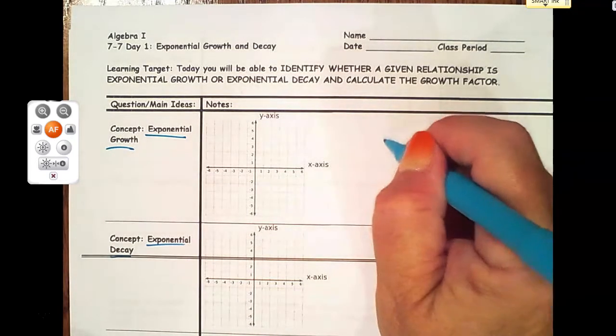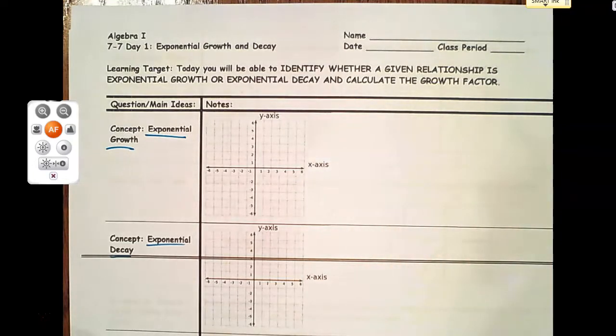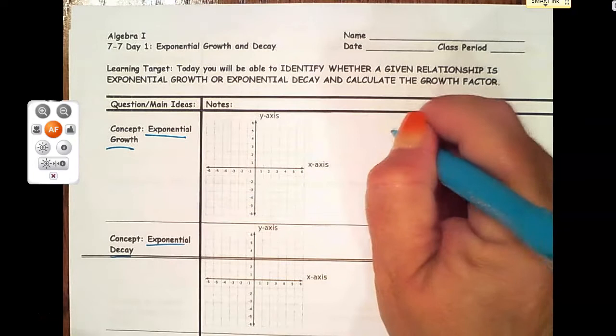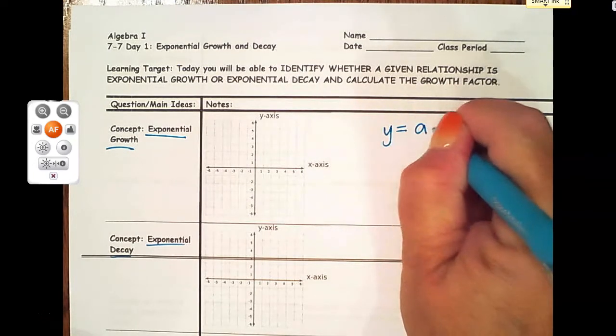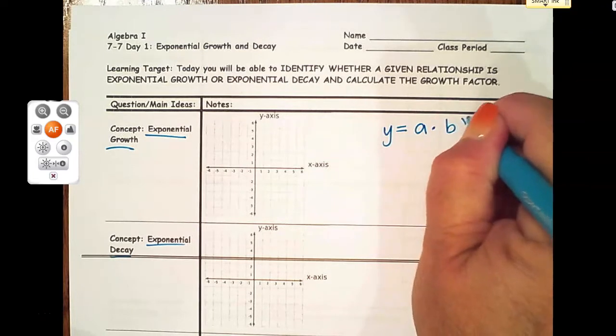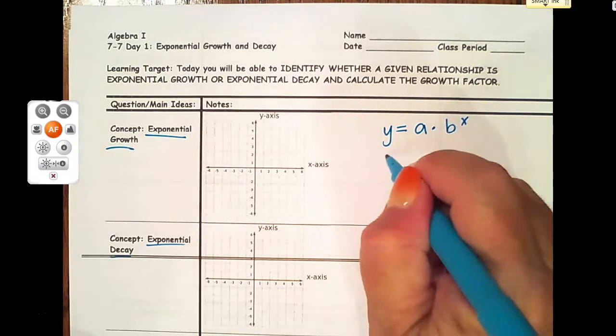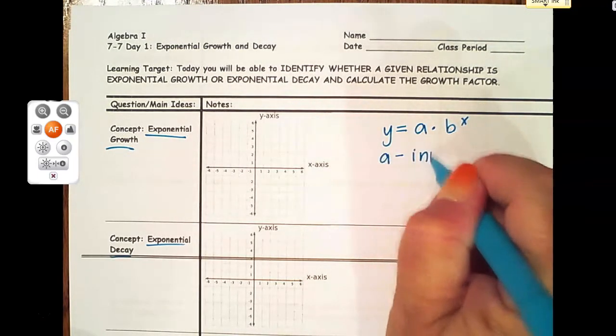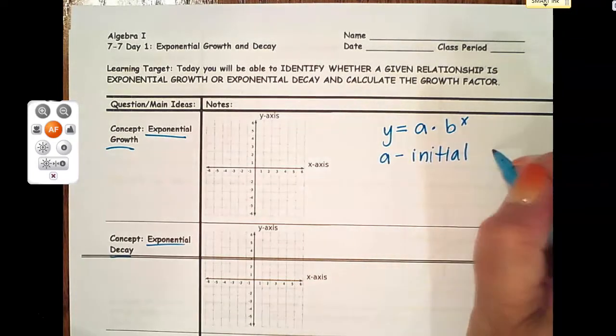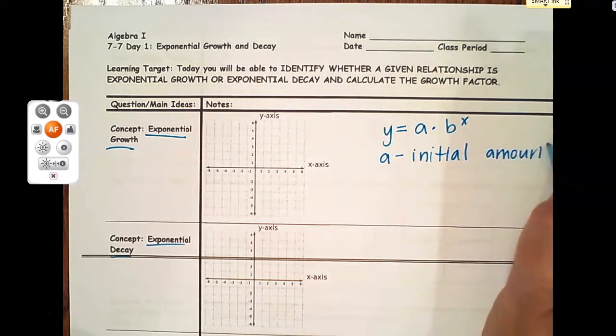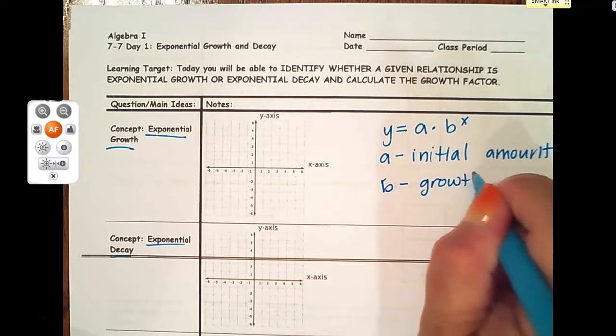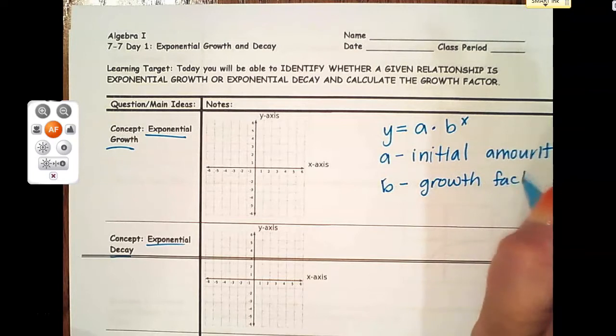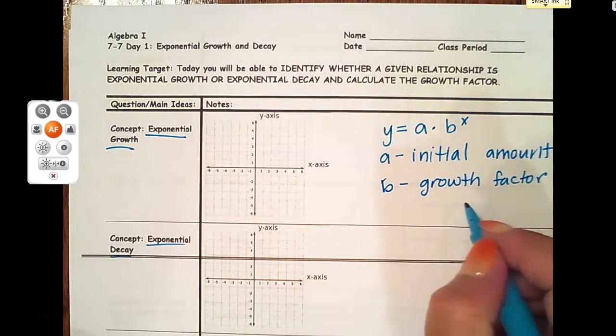First I'm going to give you a general formula and then we'll look at some specific examples. In general terms, the exponential equation is a times b to the x, and we're thinking about a as the initial amount of something, and b as a growth factor - how much does something grow over a period of time.